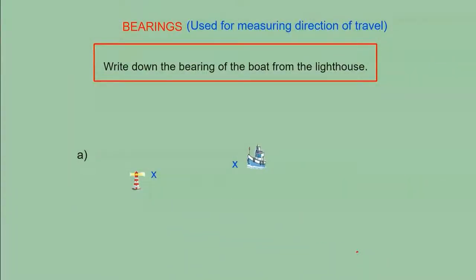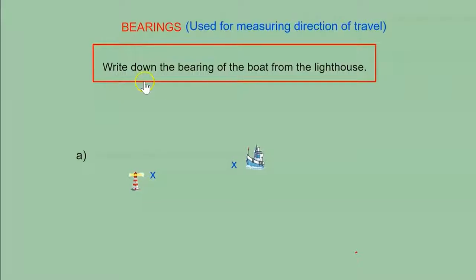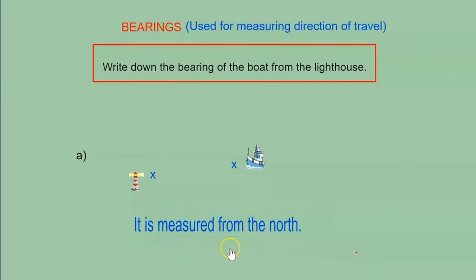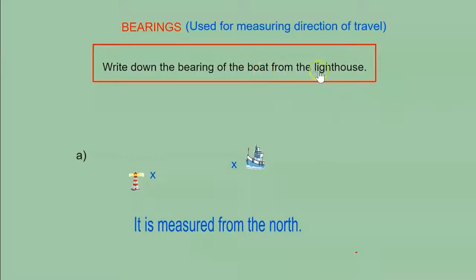What are bearings? Bearings are used to measure direction of travel. Here we have a boat and a lighthouse and we're going to write down the bearing of the boat from the lighthouse. First, we're going to measure from the north. We need to find the north — the north is at the object which comes after the word 'from'. Here we have lighthouse coming after from, so that is where our north is going to be. Put the north there by the lighthouse.